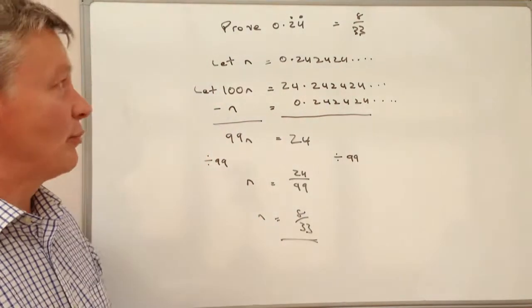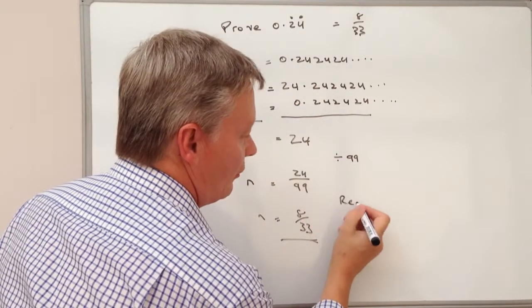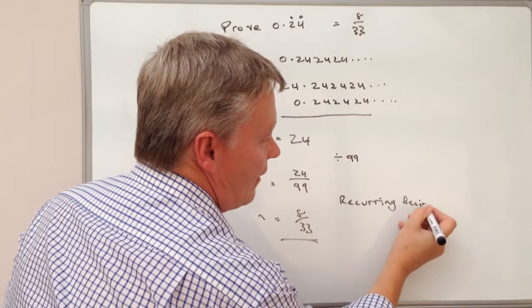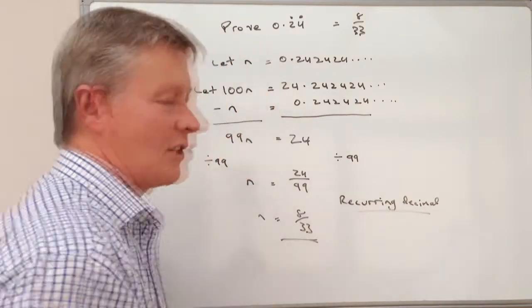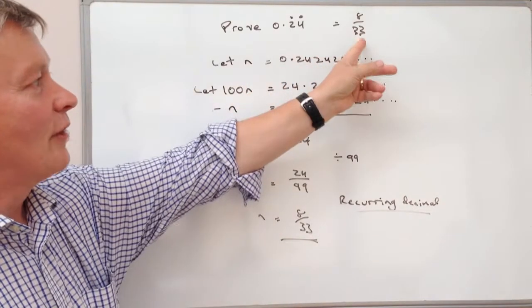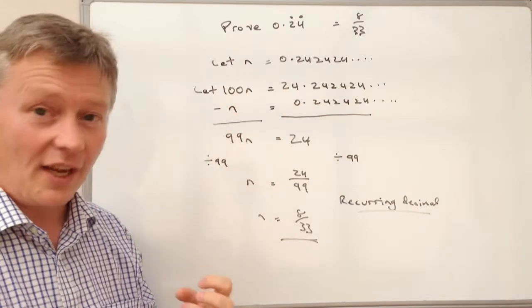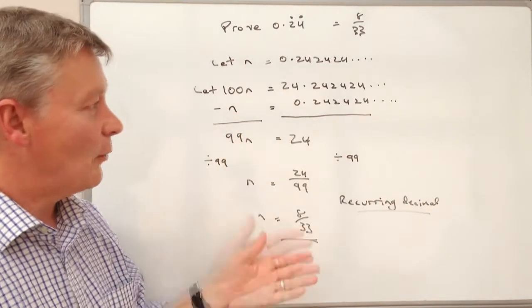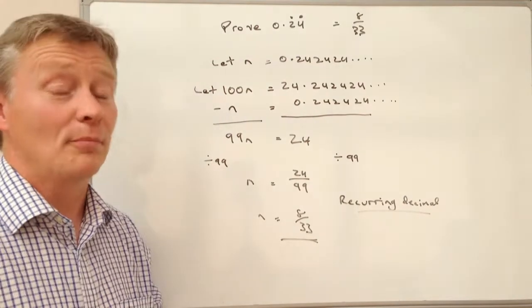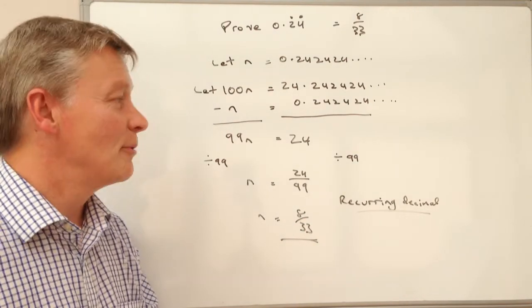So that's how you can prove a recurring decimal. And the word is recurring decimal is a fraction. Sometimes on some of the papers that you see you might find that you've got 3 digits over here. Well in that case you would multiply by 1000 and take n away. If you did it that way and followed the logic through you should find that you should be able to score a couple of marks on a fairly high level GCSE or equivalent paper.